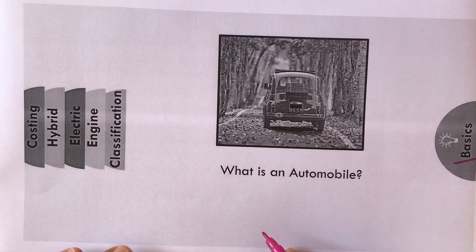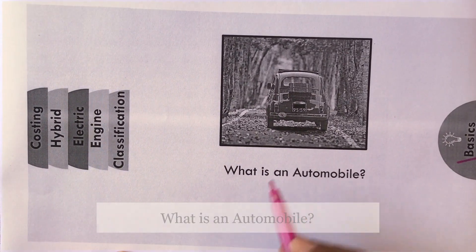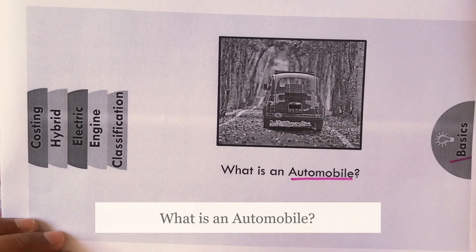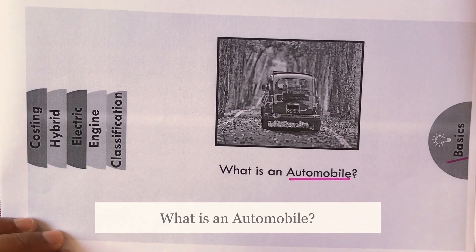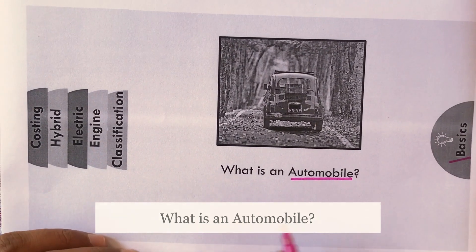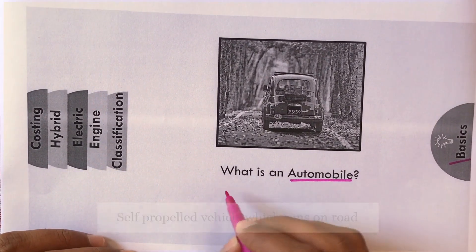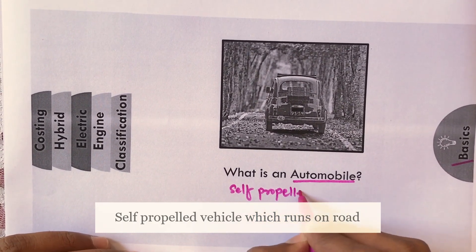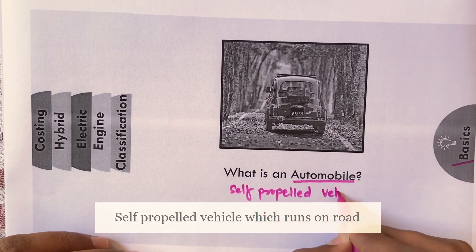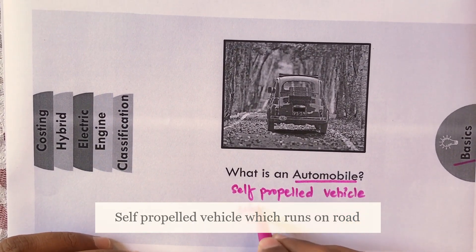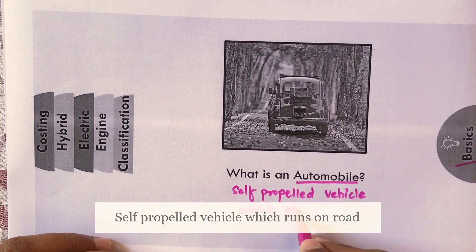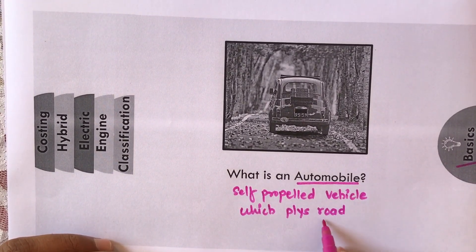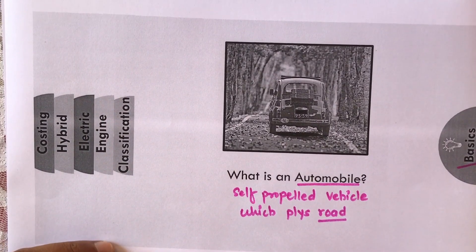Before going towards the basics of vehicles, how can we define an automobile? An automobile is nothing but a self-propelled vehicle which plies or runs on the road. That is nothing but our automobile.